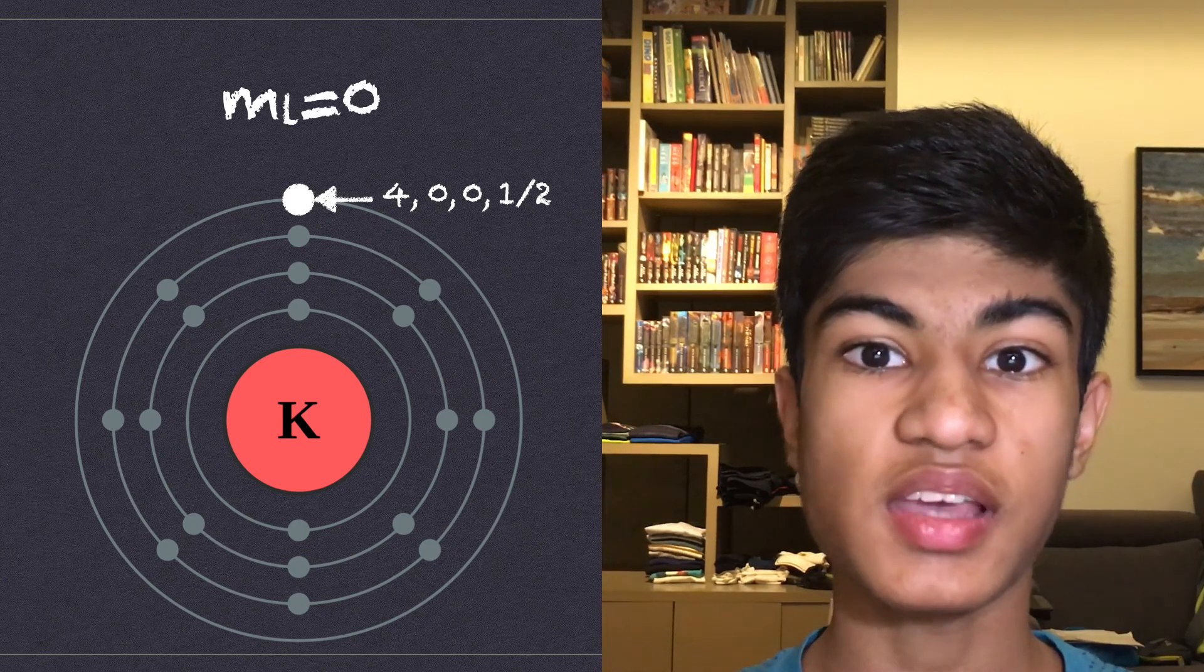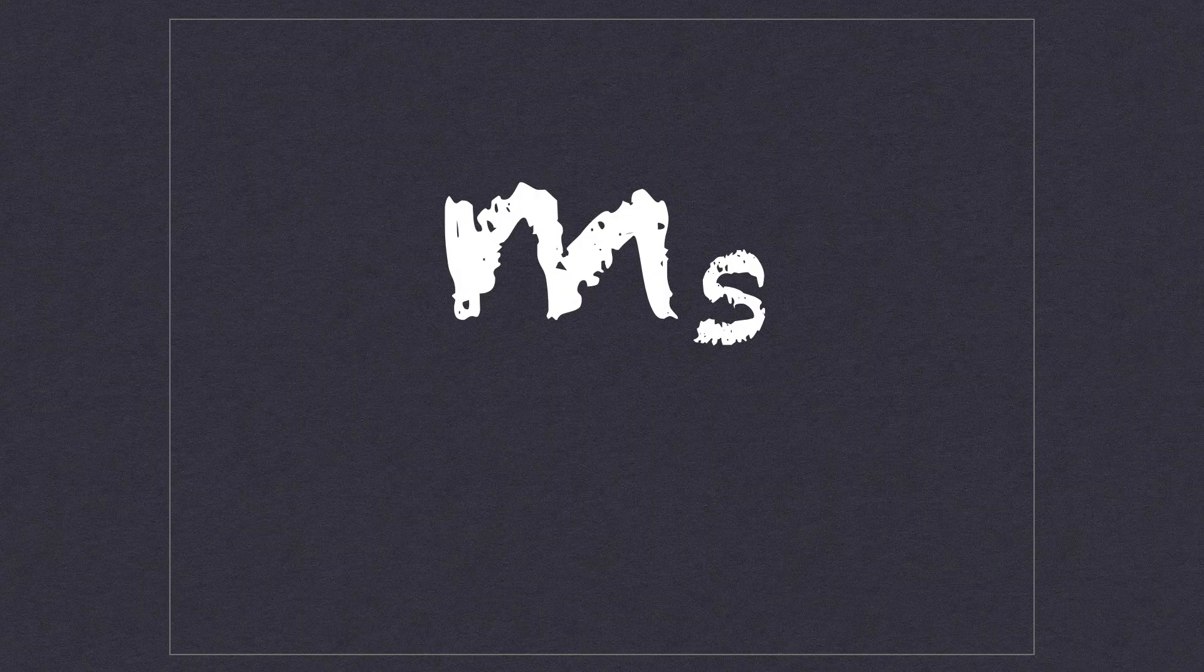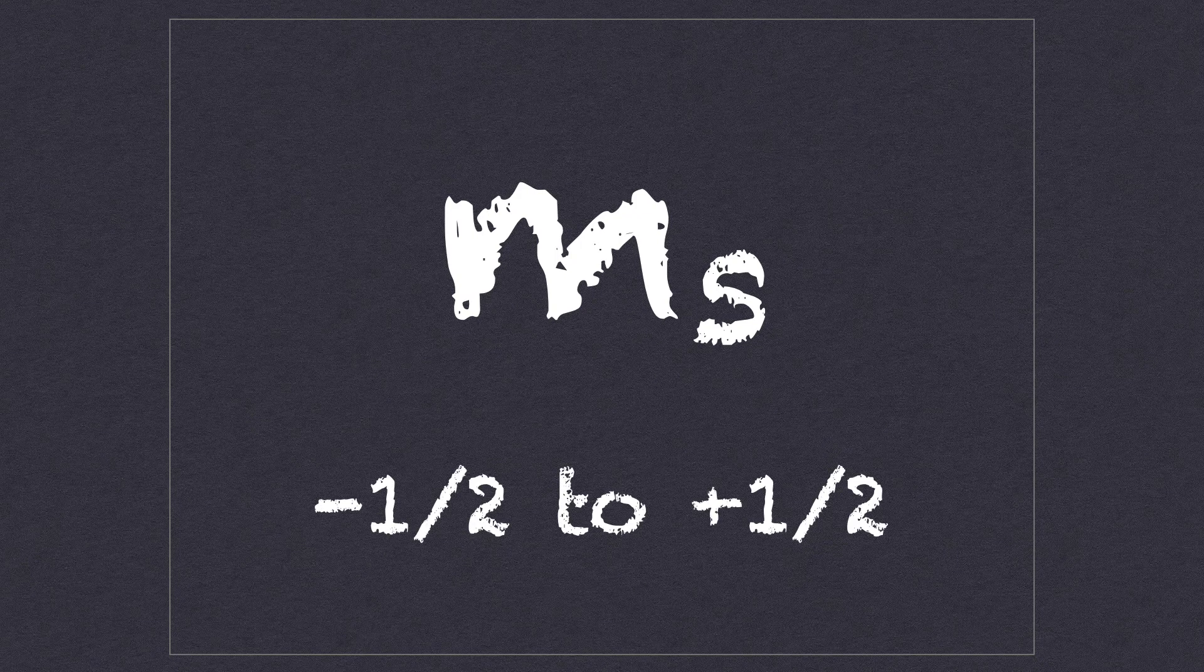Now, we know that the four quantum numbers are unique for each electron in an atom. And each orbital can only hold two electrons. So how do we differentiate between each electron in an orbital? It's simple. All electrons have a spin value. A spin value can be either half or minus half.